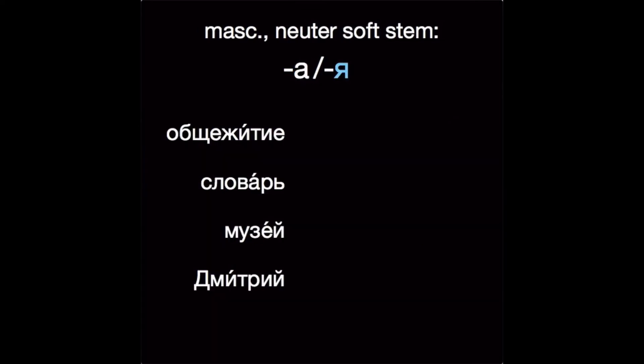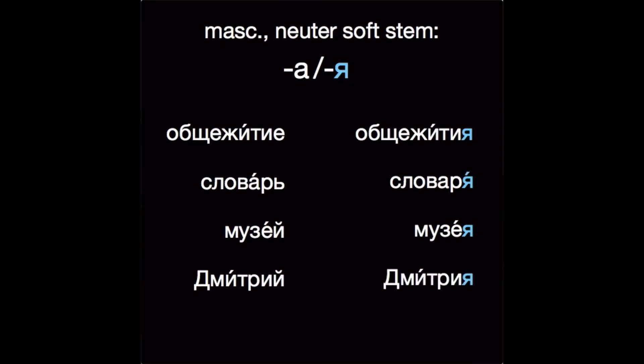And after soft stems, we'll spell that ending with the letter Я. For example: общежитие → общежития, словарь → словаря, музей → музея, Дмитрий → Дмитрия. Remember that we're going to drop the И краткая and the мягкий знак (the soft sign) before we add that ending.